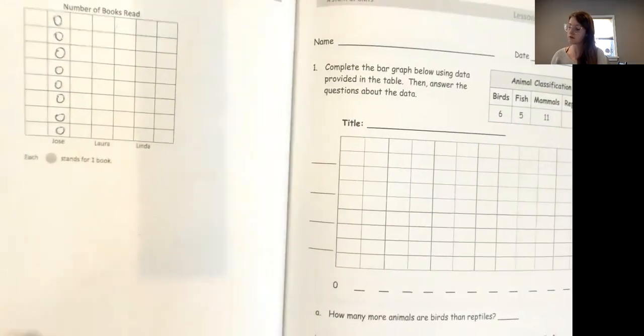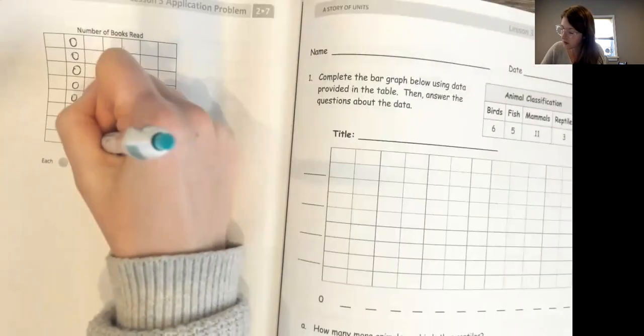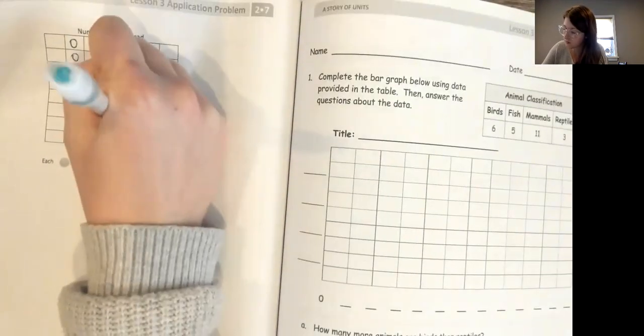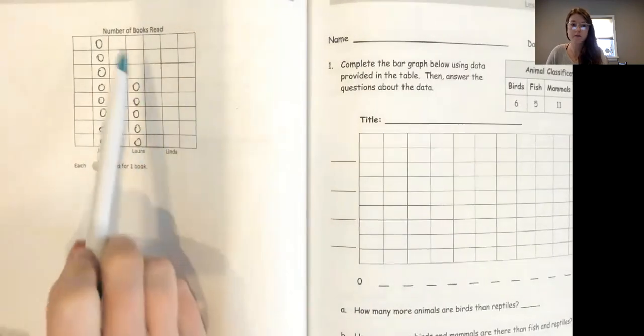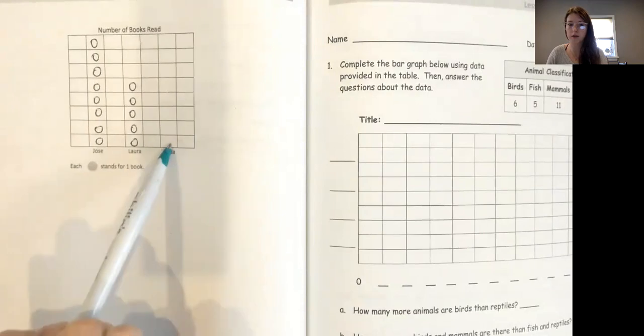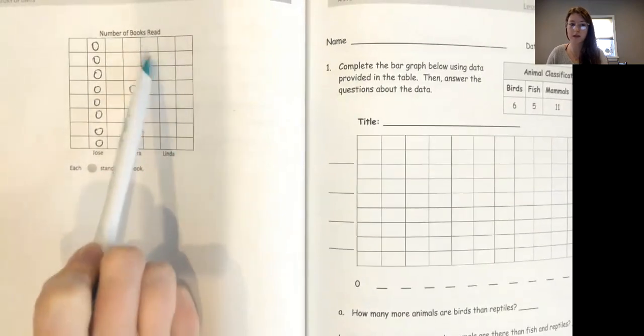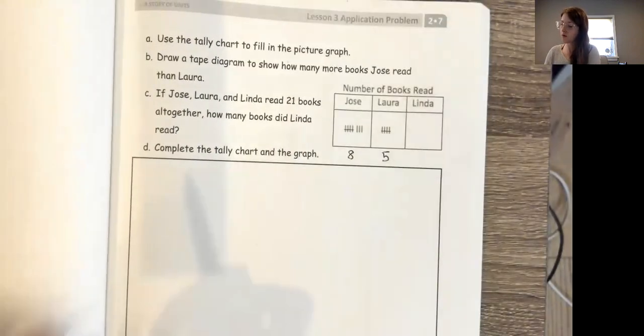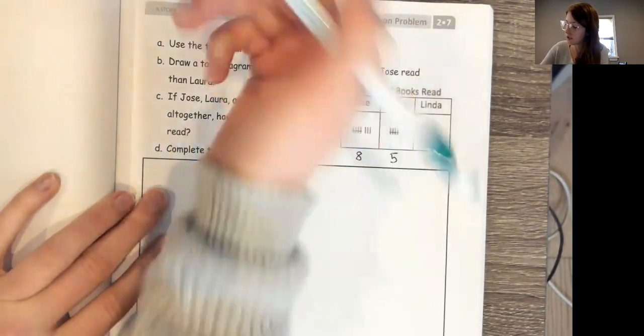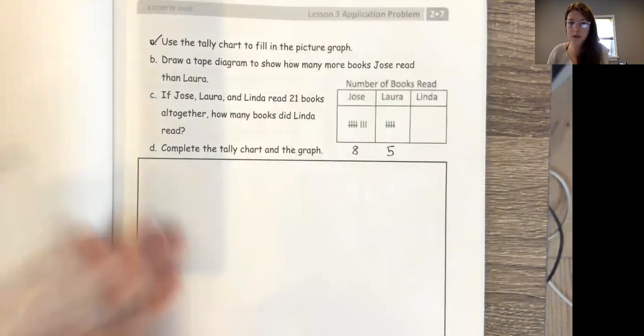And I know Laura read five books: one, two, three, four, five. Great. So I filled in part of my graph already. The last part I need to figure out is how many Linda read. I know that I'm gonna be able to figure that out as I keep going. So I use my tally chart. I'm gonna check this off to remember that I already did this part.